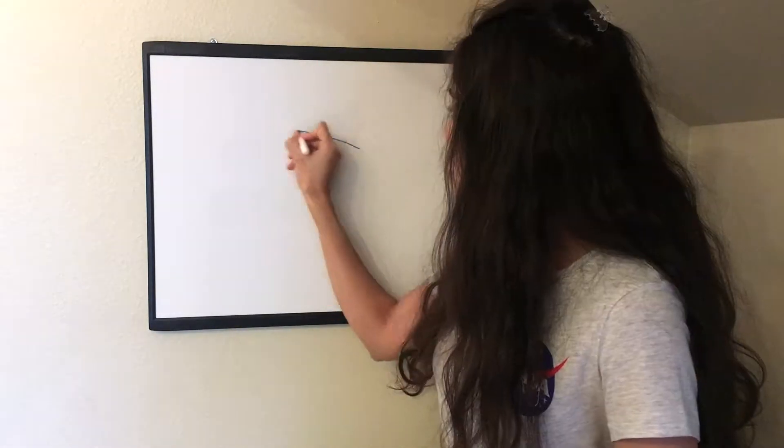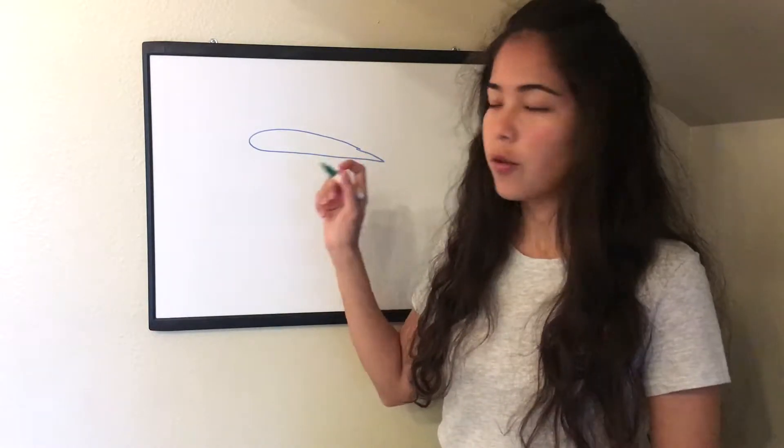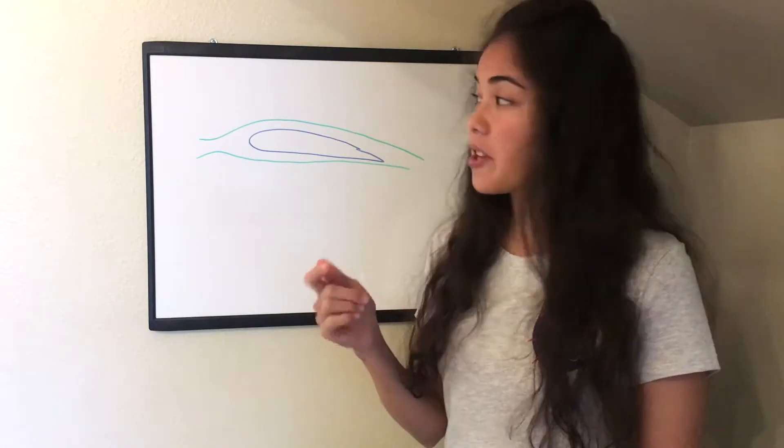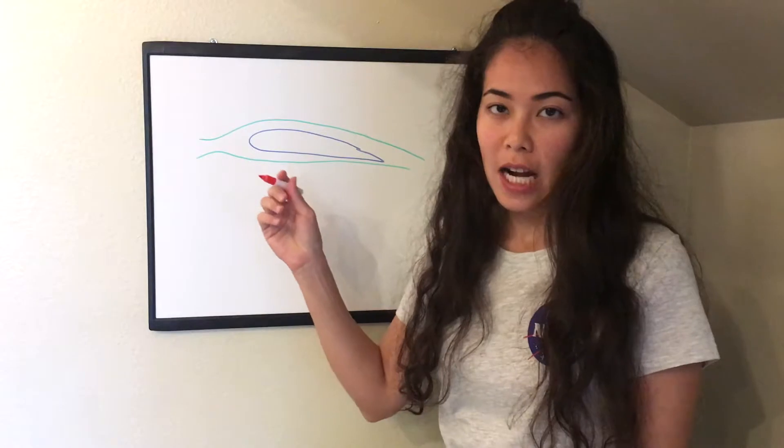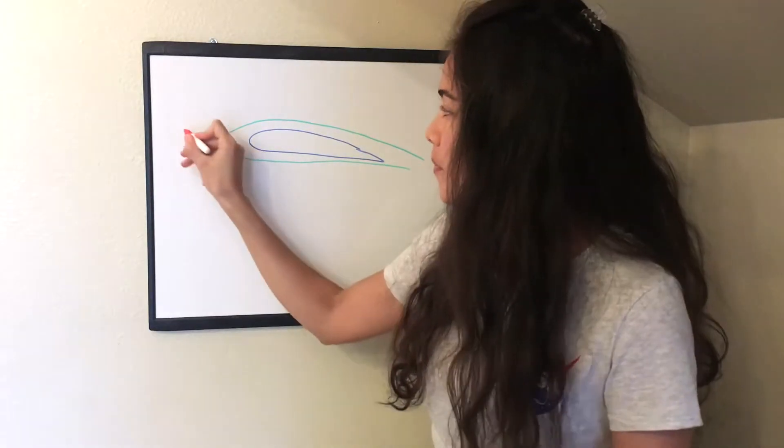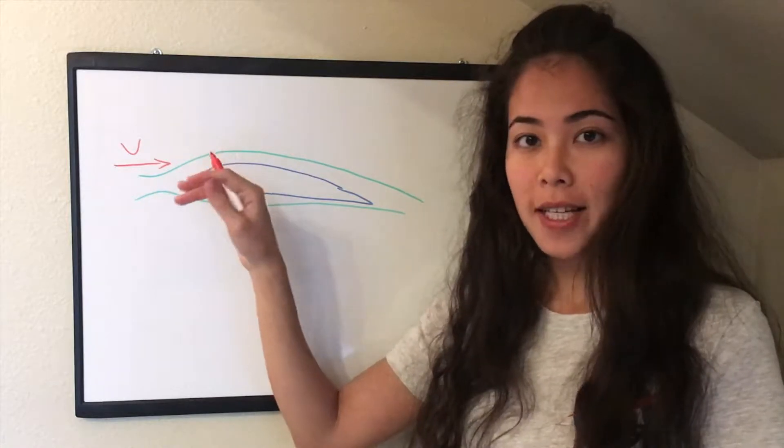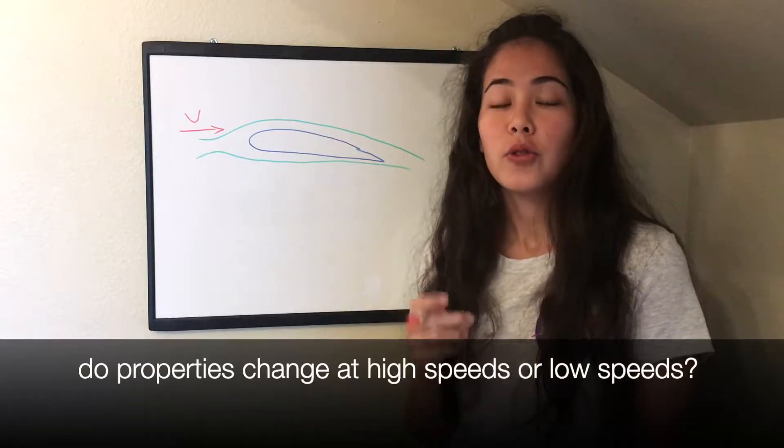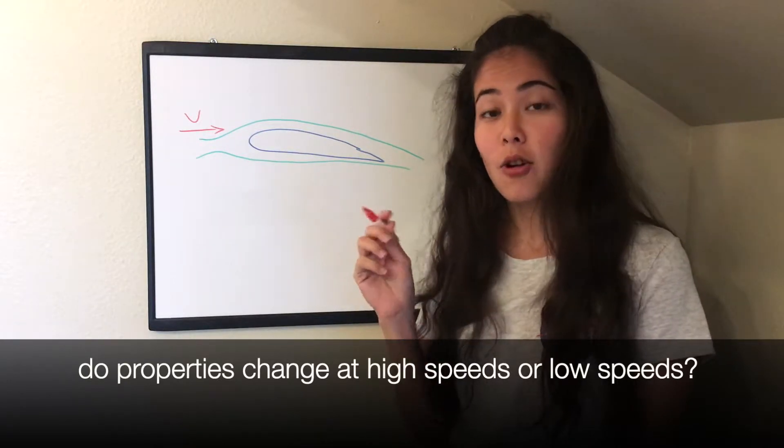So first imagine that we have an airfoil and we have air flowing around the airfoil. And remember that air has some velocity as we described in the previous video. So as the air approaches the wing its properties can change. Now do you think that its properties will change at high speeds or low speeds?